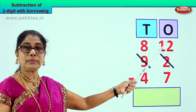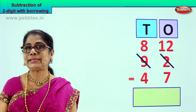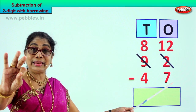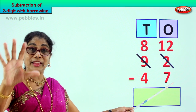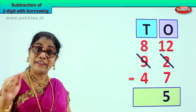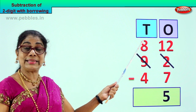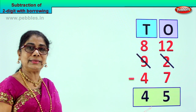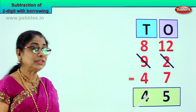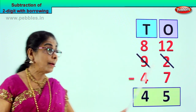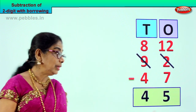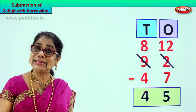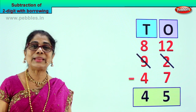Now from 12 we can take away 7. 12 take away 7 — counting: 7, 8, 9, 10, 11, 12 — that is 5. From 12 take away 7 is 5. Here you have 8 tens — 8 tens minus 4 tens give you 4 tens. 8 minus 4 is 4. 92 minus 47 gives you the answer 45. Double digit subtraction with borrowing.